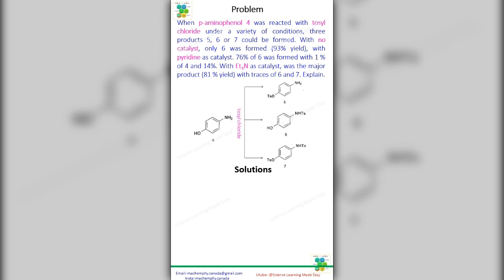Explanation to this question. The amino group in the neutral compound 4 is more nucleophilic than the phenolic OH and gives only the sulfonamide 6. Triethylamine,